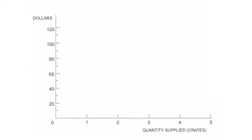This graph has quantity supplied by the farmer in crates on the horizontal axis and dollars on the vertical axis. We plot the marginal cost points from the table. The marginal cost for one pumpkin is $20, then it goes up to 30, then higher, with the highest marginal cost at five crates. Note that marginal costs are increasing.